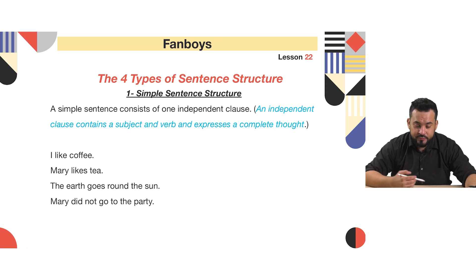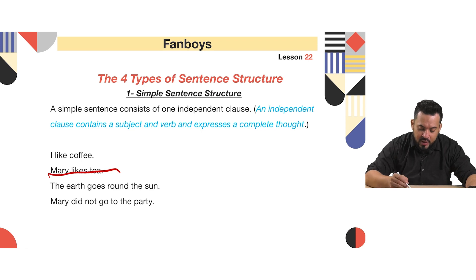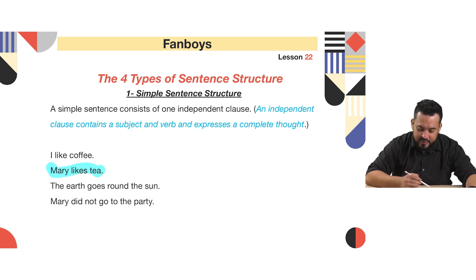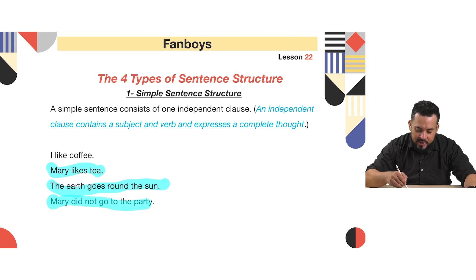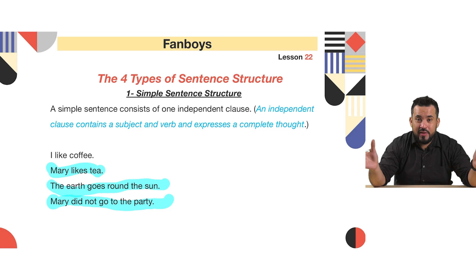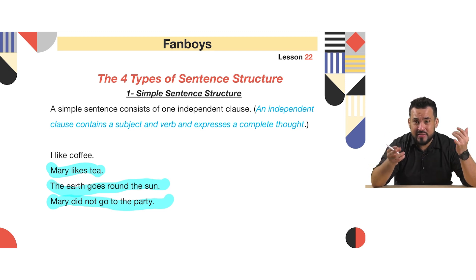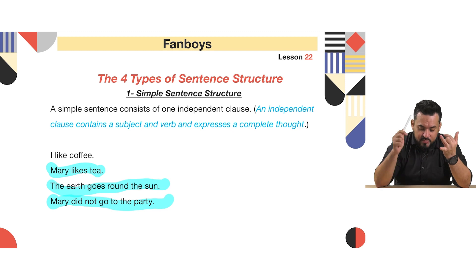Let's take some examples. 'I like coffee.' 'Mary likes tea.' 'The earth goes round the sun.' 'Mary didn't go to the party.' One action and it's completed — that is called a simple sentence. A simple sentence has one clause, which means one subject, one verb, and that's it.